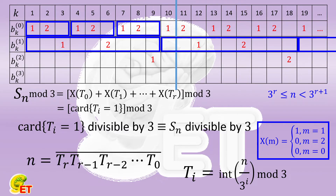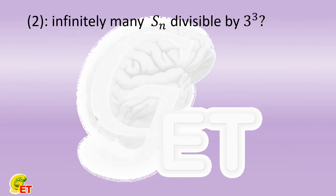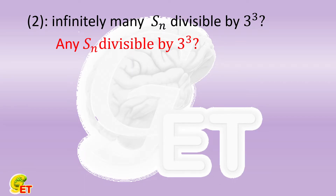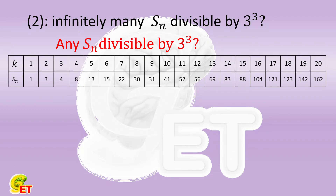Now let's look at the second conclusion: how to prove that there are infinitely many S(n) divisible by the cube of 3. Let's first see if any such S(n) exists. Listing some values, when n equals 20, we find S(20) equals 162, which is 6 times 27 — the cube of 3. So S(20) is divisible by the cube of 3.